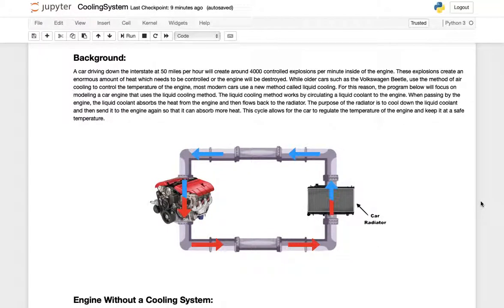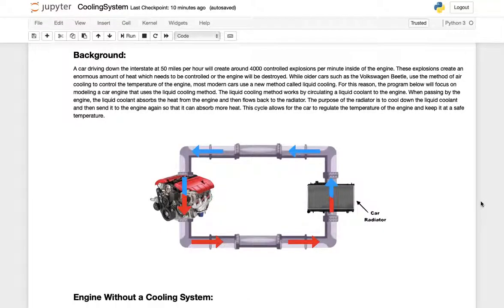Car engines use spark plugs and fuel to create controlled explosions inside the engine. These controlled explosions propel the car forward and allow it to move, but they also create an immense amount of heat that needs to be controlled or the engine will be destroyed.